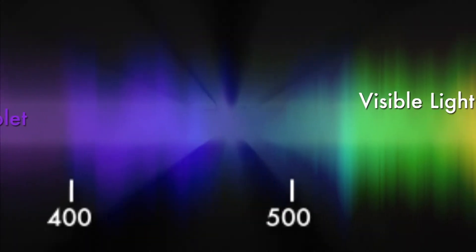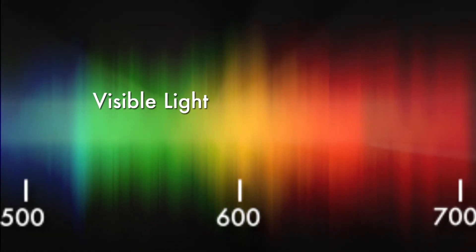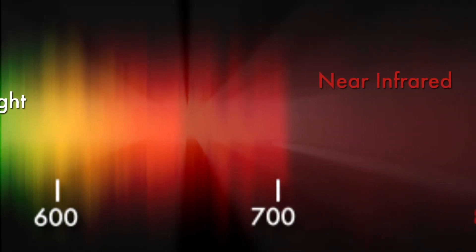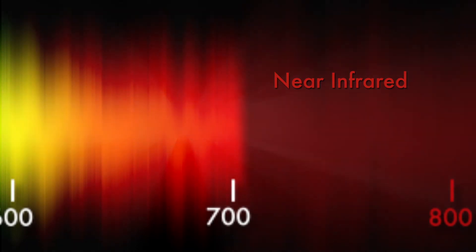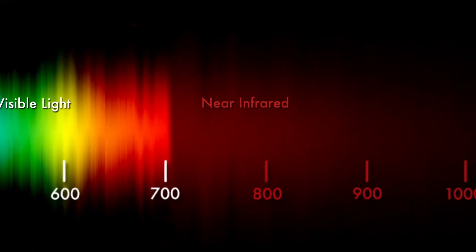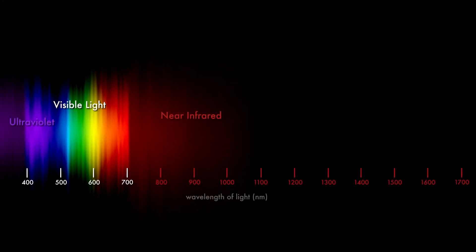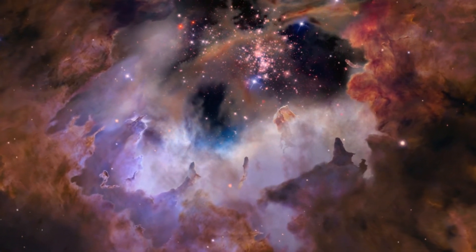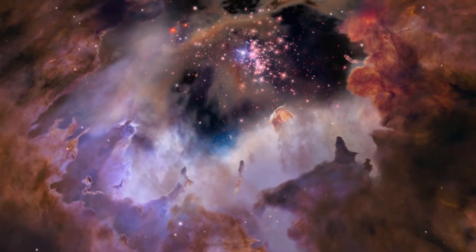There are two spectrometers, one at optical wavelengths similar to what our human eyes see, roughly 300 to 1000 nanometers wavelength, and one in the near-infrared, from 1000 to 3500 nanometers wavelength.